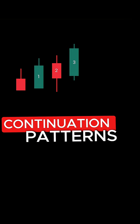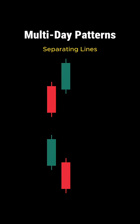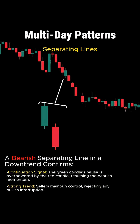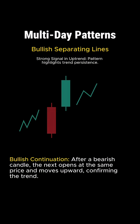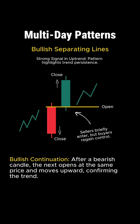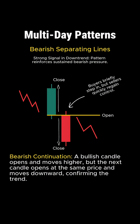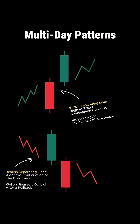The first pattern is separating lines. In a strong trend, a new candlestick opens right at the same price as the last candlestick and keeps the momentum going. In an uptrend, you'll have a bearish candlestick that closes lower, then the next one opens at the same price but continues upward. In a downtrend, you'll have a bullish candlestick that closes higher, followed by another that opens at the same price and keeps moving downward. Separating lines confirms that the trend is still on track.